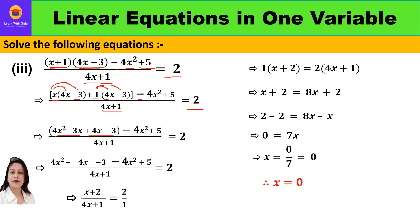Then 1 times 4x and 1 times minus 3 gives 4x minus 3, minus 4x² plus 5 as it is, divided by (4x plus 1) equal to 2. While simplifying, 4x² comes as it is, and minus 3x plus 4x gives x, then minus 3 as it is, minus 4x² and plus 5.